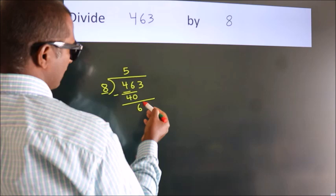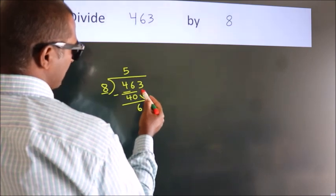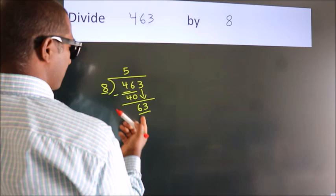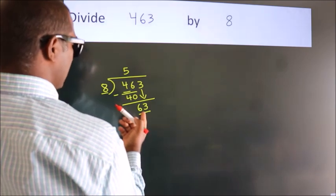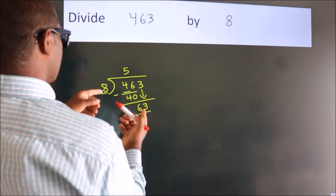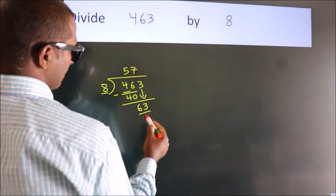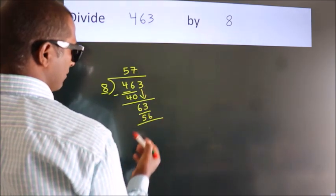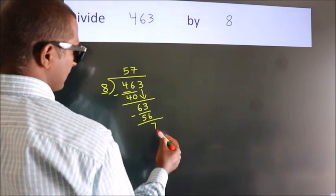After this, bring down the beside number. So 3 down. So 63. A number close to 63 in 8 table is 8 sevens 56. Now we subtract. We get 7.